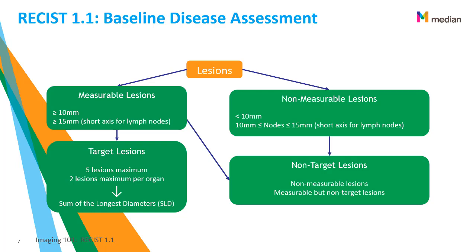The measurable lesions become the target lesions, with a maximum of five per patient and two per organ. The sum of the longest diameters of these target lesions is termed the tumor burden. Non-measurable lesions are still followed, but qualitatively, and are classified as non-target lesions — there is no quantitative metric for these. The evaluation of non-target lesions is recorded by the reader if there are any unequivocal changes in these tumors.